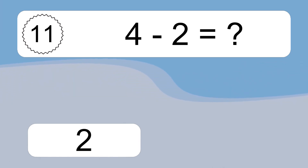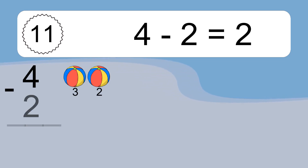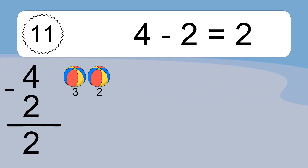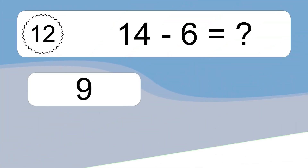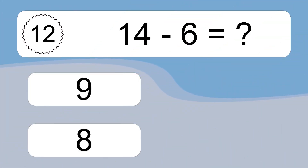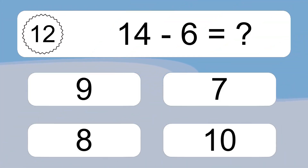4 minus 2 equals what? 4 minus 2 equals 2. Let's count it: 3, 2.